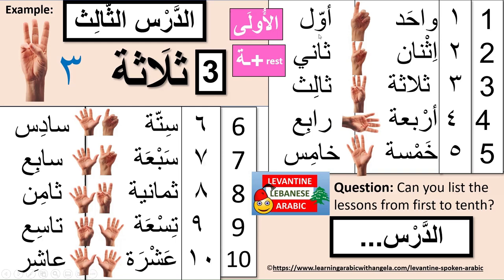واحد becomes أول, and in the feminine it becomes أولى. So أول means first, and أولى is first in the feminine. Number two, نين, becomes تاني. Notice the ة in Arabic — in spoken Lebanese it becomes a تة. So apart from أول becoming أولى, تاني becomes تانية in the feminine.